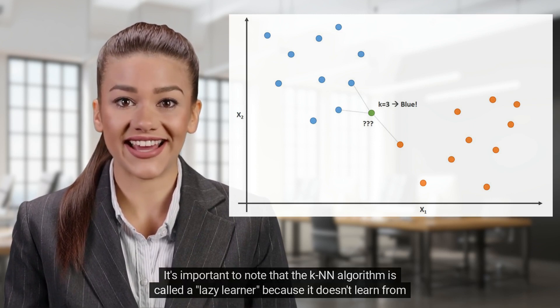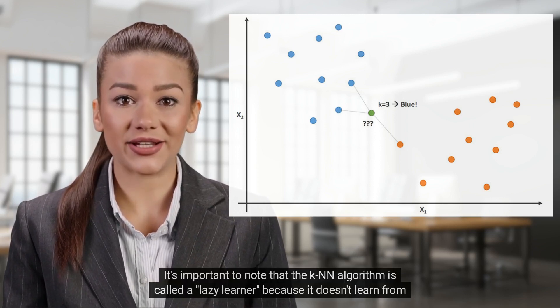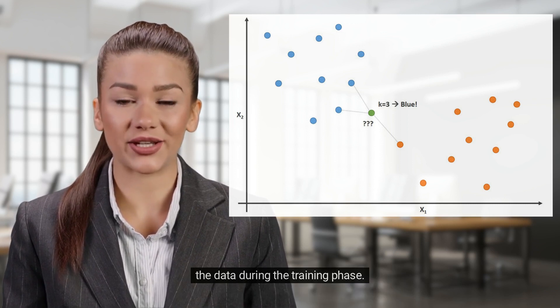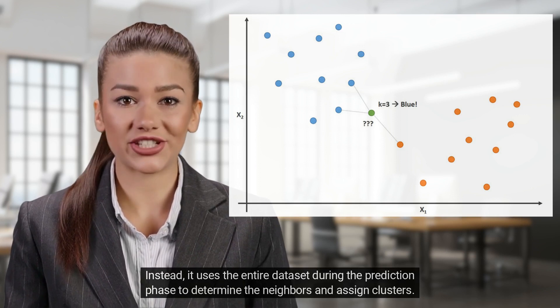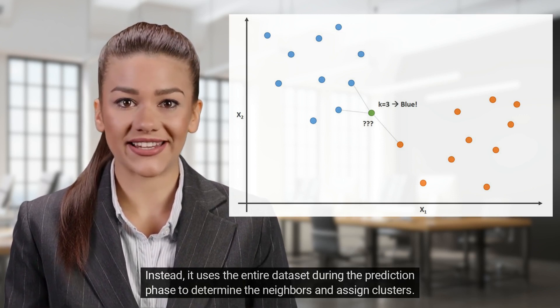It's important to note that the K-N-N algorithm is called a lazy learner because it doesn't learn from the data during the training phase. Instead, it uses the entire data set during the prediction phase to determine the neighbors and assign clusters.